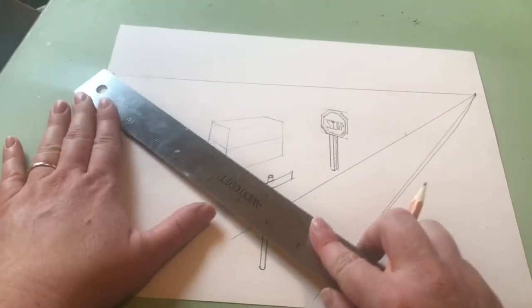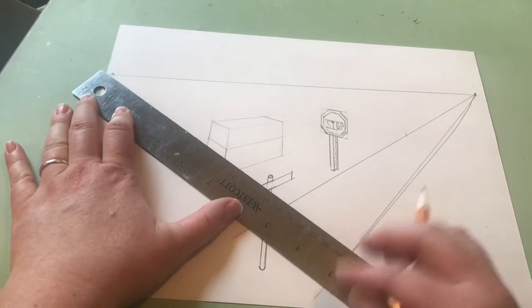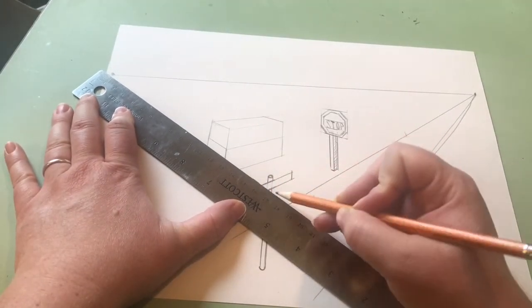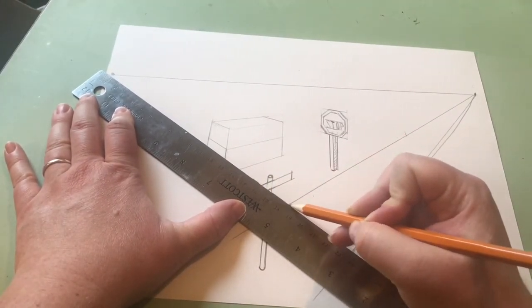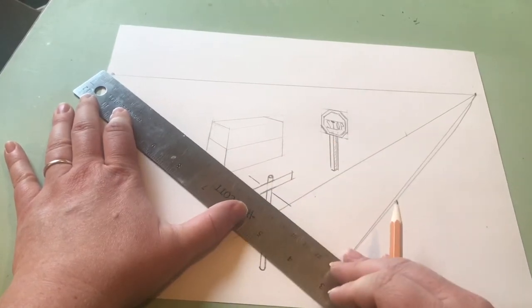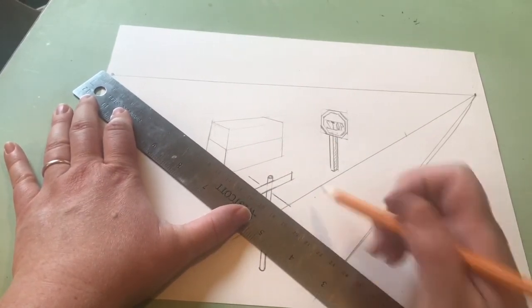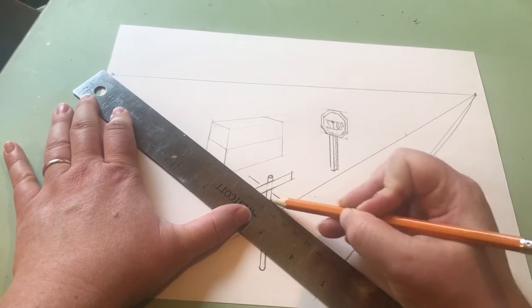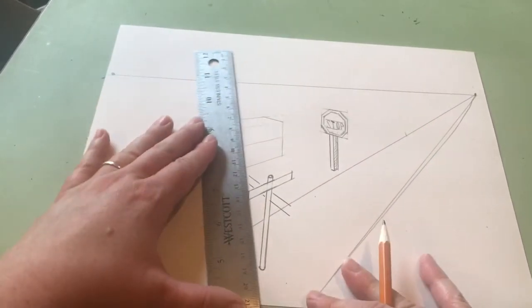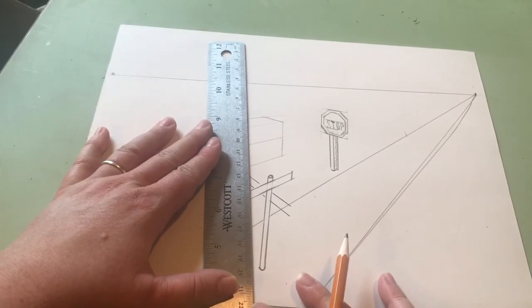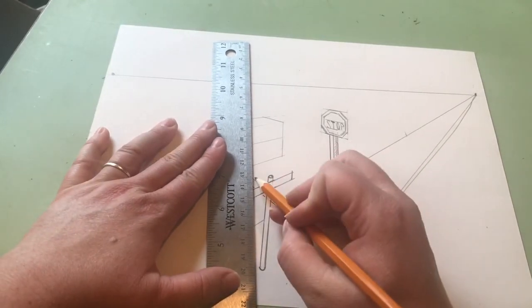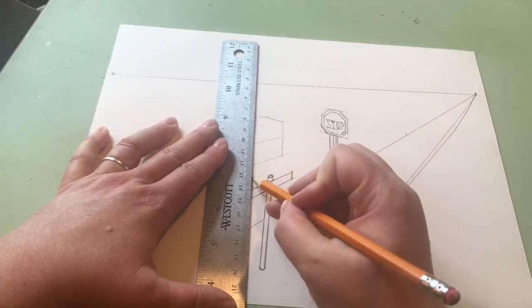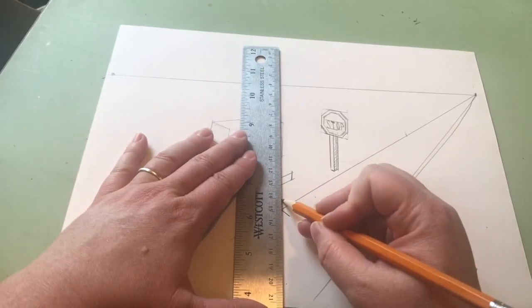And then I could do another one going in the other direction, and maybe this one's going behind everything else. Use my left vanishing point and then making sure that stays straight up and down for the left and on the right side of the sign.